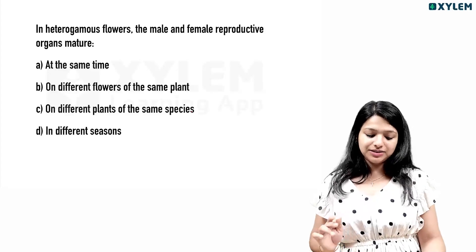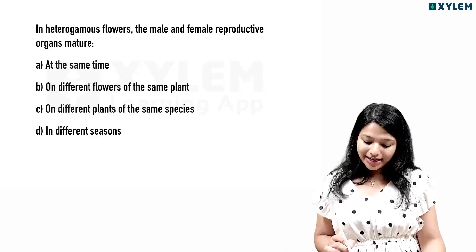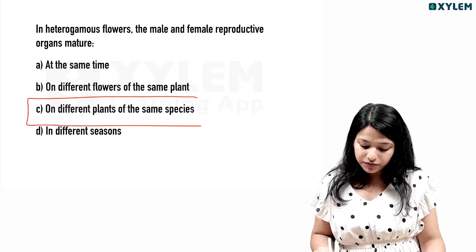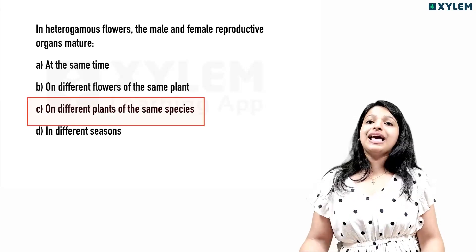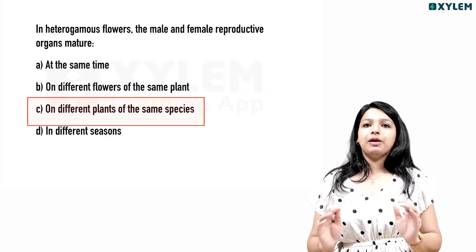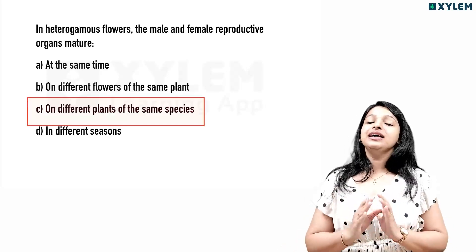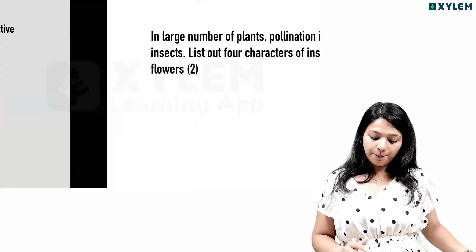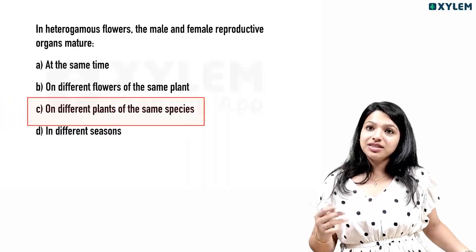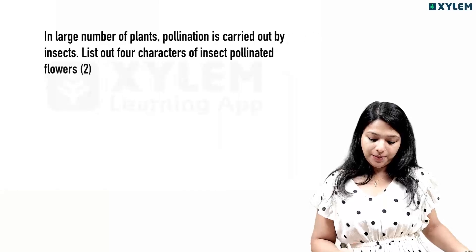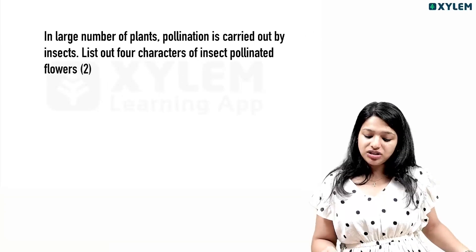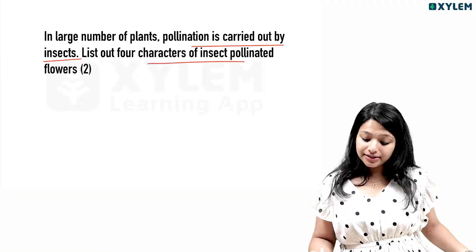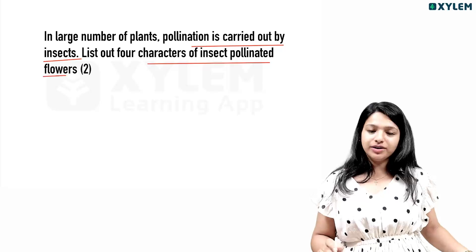In different seasons. A heterogamous flower means on the same plant, or about different plants of the same species. Pollination carried out by insects — let's look at 4 characteristics of insect-pollinated flowers.